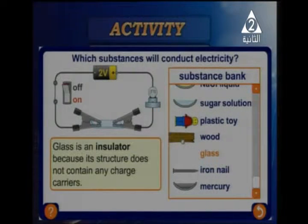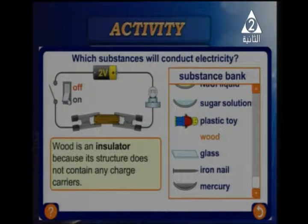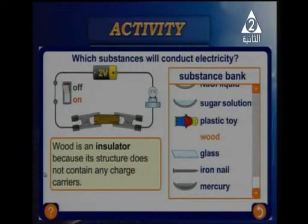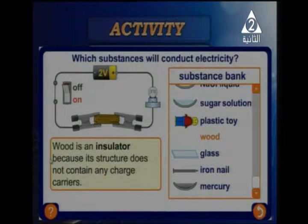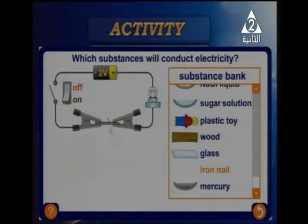Also, if I replace glass with wood and turn on the circuit, wood is an insulator because its structure does not contain any charges. Wood, plastic, and similar materials have nothing to conduct electric energy.